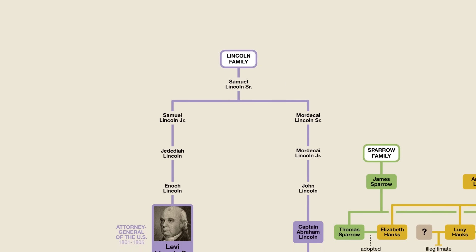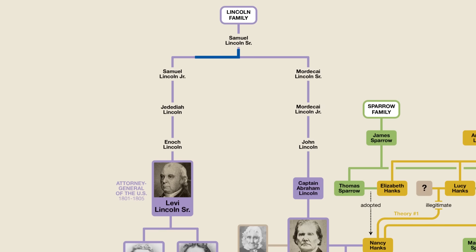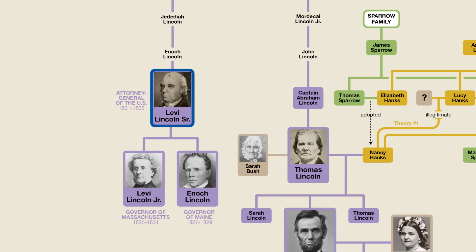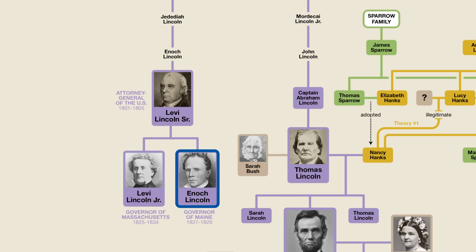By the time of the American Revolution, one of Samuel's great-great-grandsons had become a prominent lawyer in Massachusetts — Levi Lincoln Sr. Levi Sr. helped write the Massachusetts State Constitution and worked on a court case that led to abolishing slavery in that state. He then served in the State House of Representatives and the State Senate before becoming the Attorney General of the United States under President Thomas Jefferson. Two of his sons went on to become prominent politicians as well — Levi Lincoln Jr. serving as a US Congressman and the Governor of Massachusetts, and his son Enoch Lincoln serving as a US Congressman and the Governor of Maine.